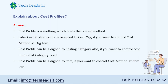Explain about cost profiles. A cost profile holds the costing method. The cost profile has to be assigned to a cost org if you want to control the cost method at the org level. It can also be assigned to a costing category to control the cost method at the category level, or assigned to an item if you want to control the cost method at the item level.